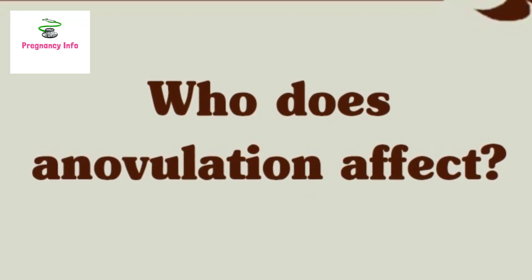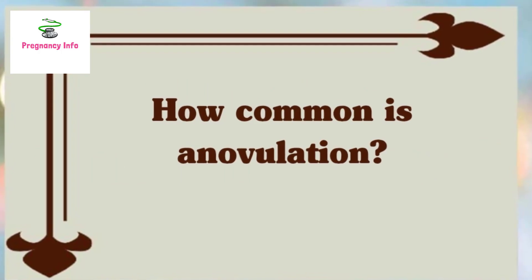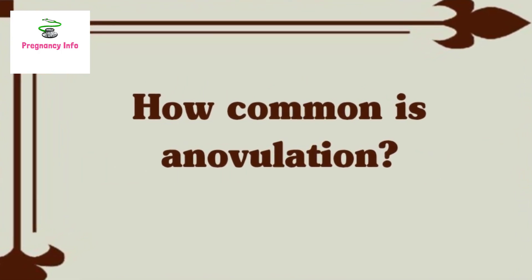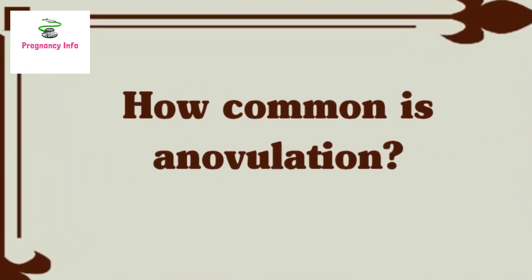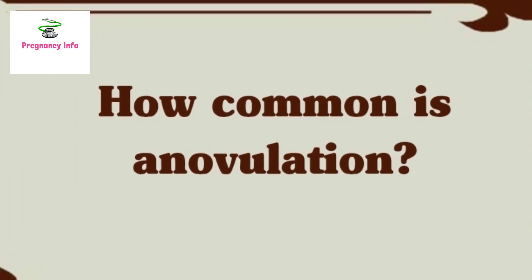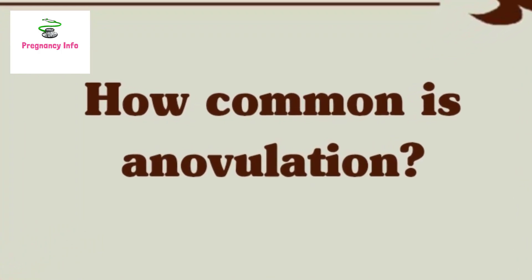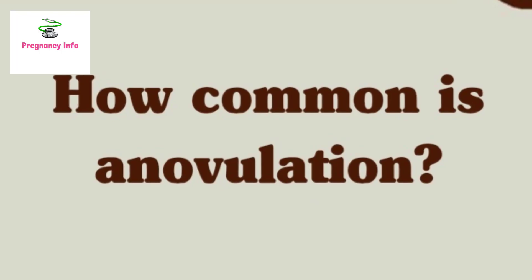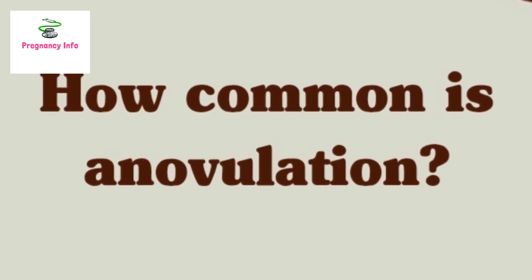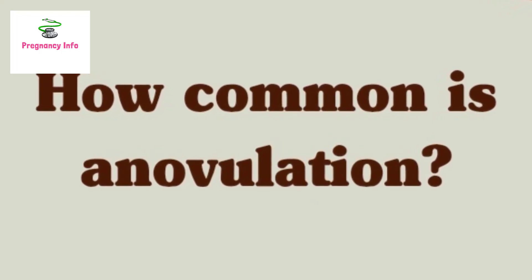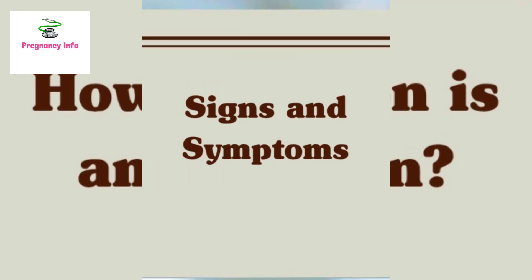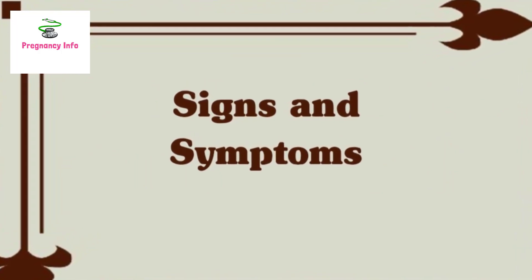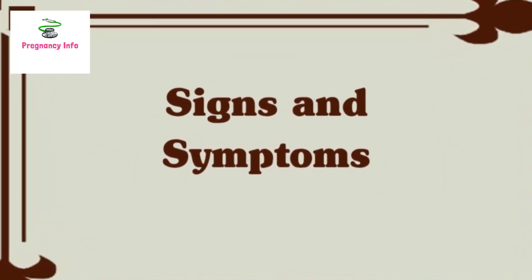How common is anovulation? Anovulation is a common condition and is the cause of approximately 25% of infertility cases. Approximately 1 in 10 people with ovaries who are of childbearing age experience anovulation at some point in their lives.